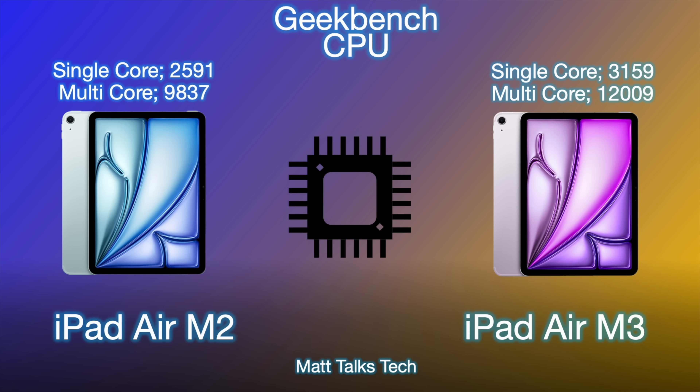We can see the difference in the Geekbench CPU scores. In single-core performance, the iPad M2 got 2591, compared to the iPad M3 which got 3159 — definitely an improvement. For multi-core performance, the M2 got 9837 compared to around 12,009 for the iPad M3. It's not a massive jump overall, but there's a solid improvement in both single-core and multi-core, and any apps utilizing that extra power will feel the difference.